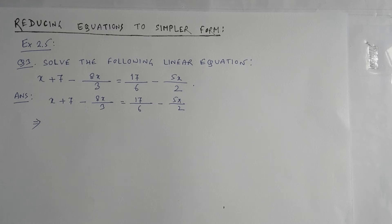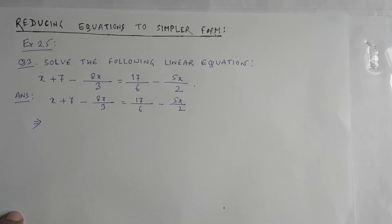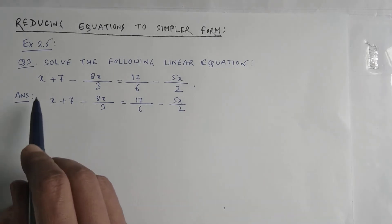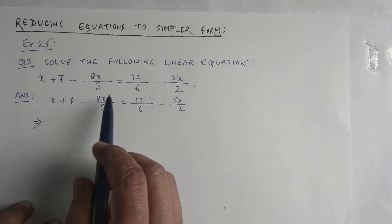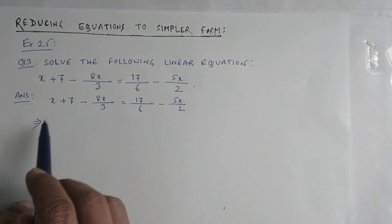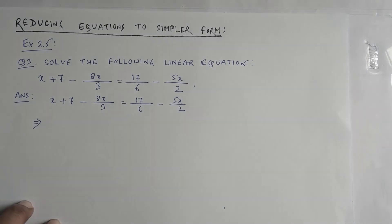This is Exercise 2.5, Question Number 3 from Linear Equations in One Variable. The question asks us to solve the following linear equation: x plus 7 minus 8x by 3 equals 17 by 6 minus 5x by 2. These linear equations are not directly in a simple form, so we will be converting them to a simpler form and then simplifying.